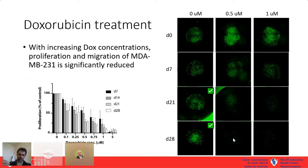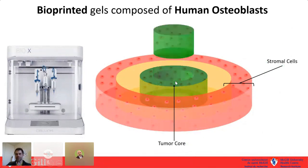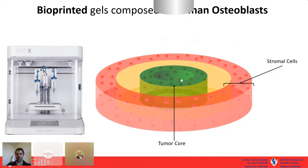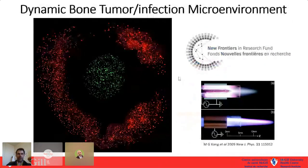As doxorubicin concentration increases in the system, tumor outgrowth is greatly diminished and the tumor core starts to be eliminated. Conceptually the model has an outer stroma, an intermediate cell-free gel layer, and a central tumor core. We can look at outgrowth, or perform little resections using a biopsy puncher to remove the core and replace it with 3D printed constructs or cements to measure drug release and effects on tumor cell migration and multicellular spheroid formation.